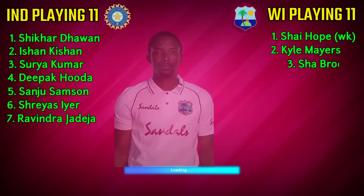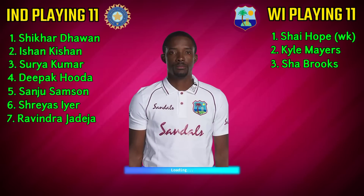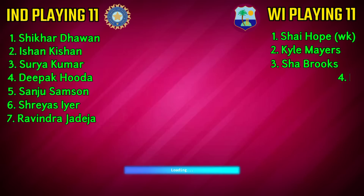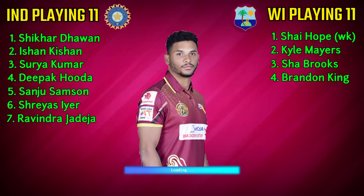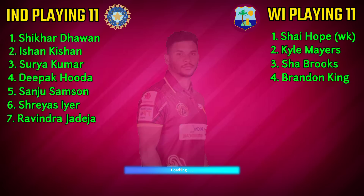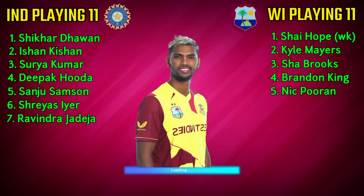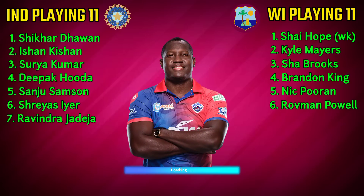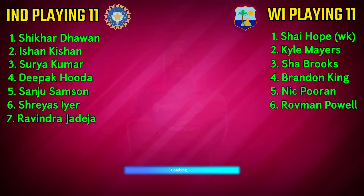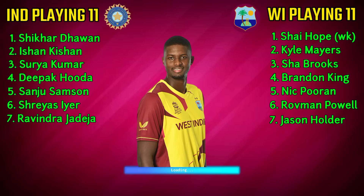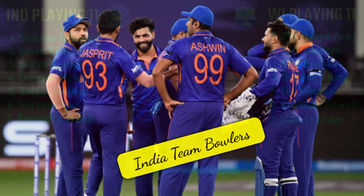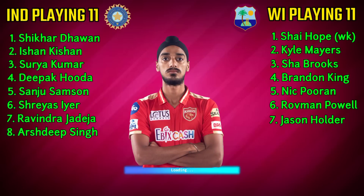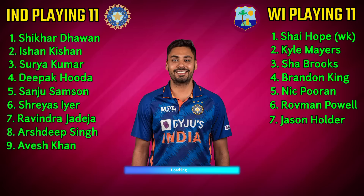West Indies team middle order. No.3: Shamarh Brooks, right-handed batsman. No.4: Brandon King, right-handed batsman. No.5: Nicholas Pooran, left-handed batsman. No.6: Rovman Powell, right-handed batsman. No.7: Jason Holder, all-rounder.